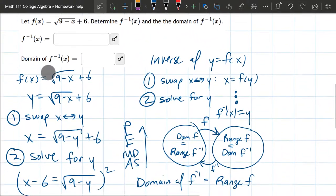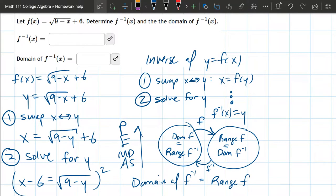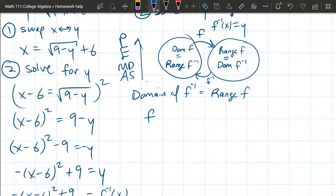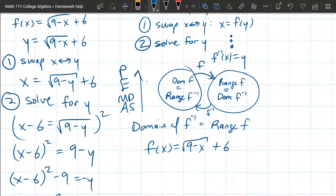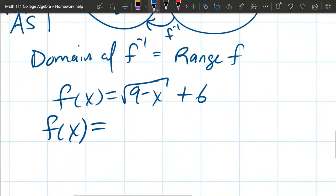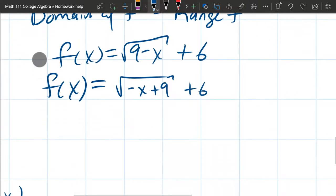So I'll rewrite our f function here. It's gonna be square root 9 minus x plus 6. I'm gonna graph this with transformations like we did back in chapter 1. And if we're gonna graph it like that, we would write square root negative x plus 9 plus 6. There's gonna be three transformations.